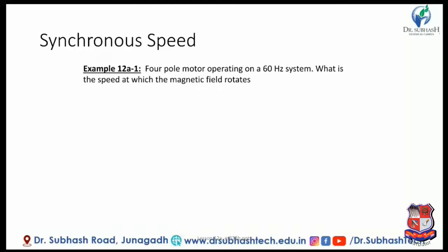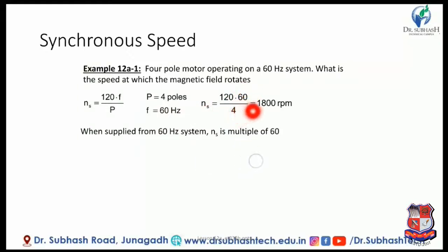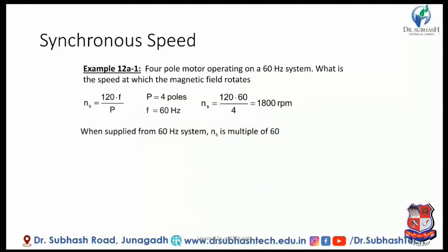What is the speed at which the magnetic field rotates? Using the equation Ns = 120F / P, with P equal to 4 poles and F equal to 60 Hz: Ns = 120 × 60 / 4 = 1800 rpm. So when supplied from 60 Hz, the rotating field rotates at 1800 rpm.